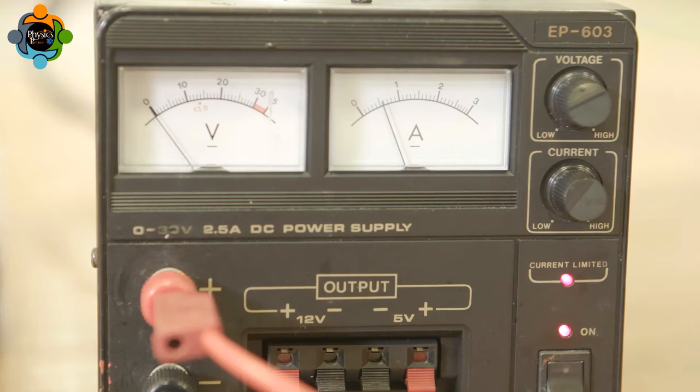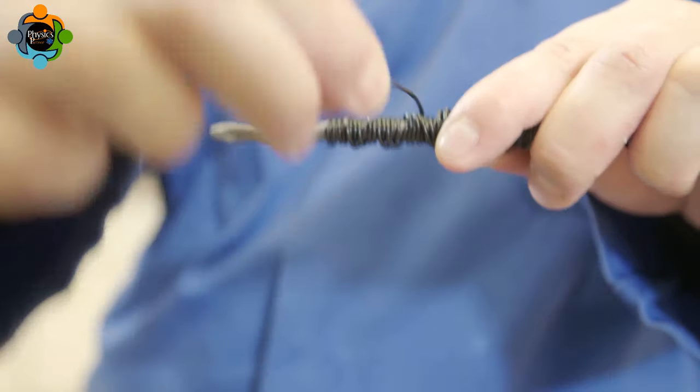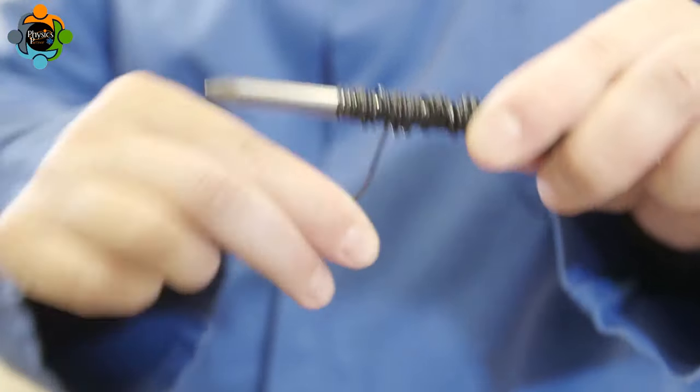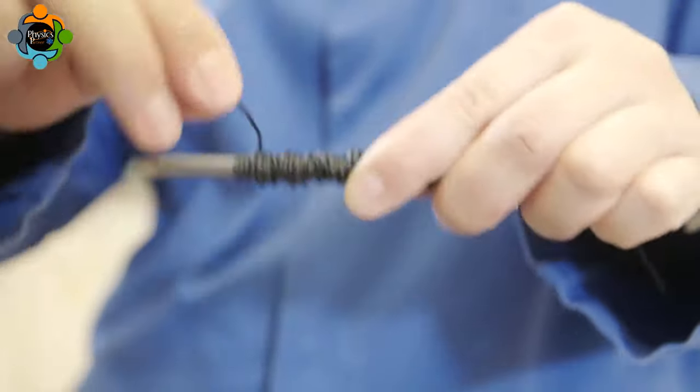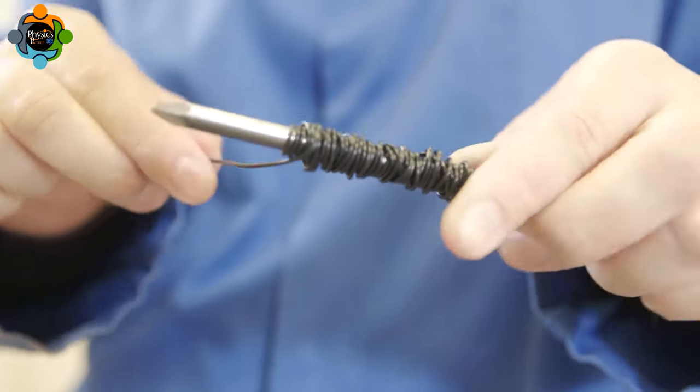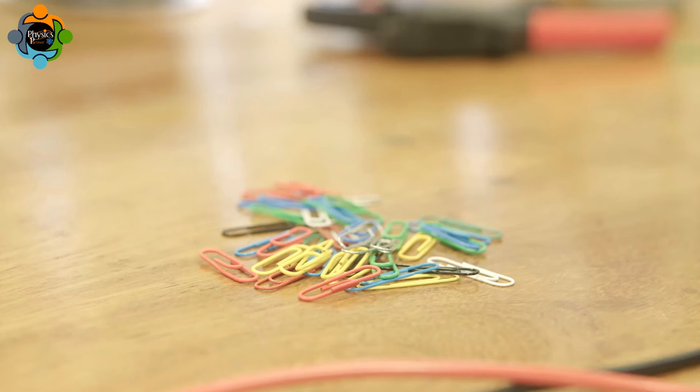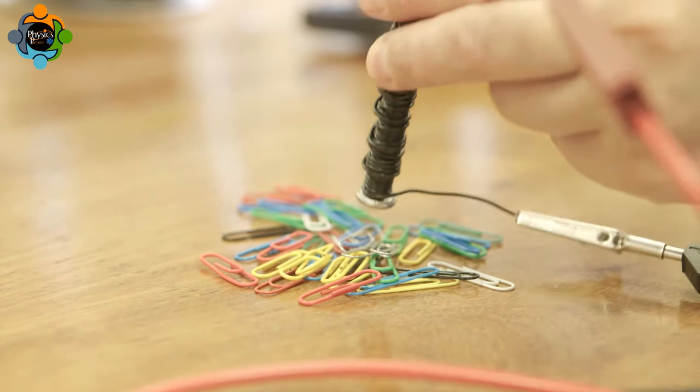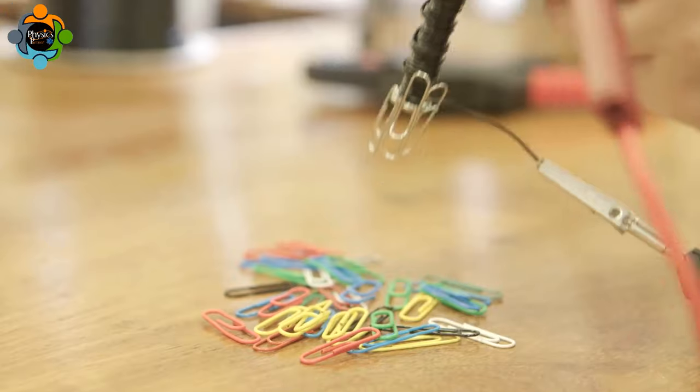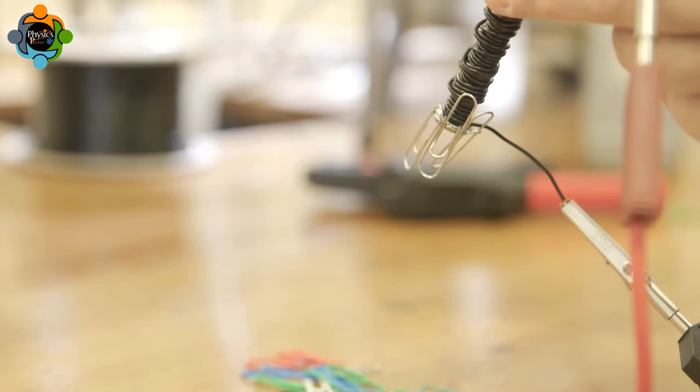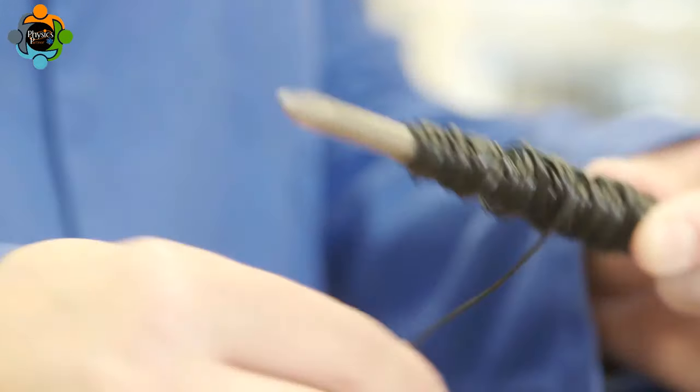The current has been returned to its original settings. The next variable being altered is the number of turns of the wire. The original number of turns was 50, which picked up one paper clip. Fifty more turns of the wire have been added. The electromagnet is turned on and the number of paper clips collected is counted.